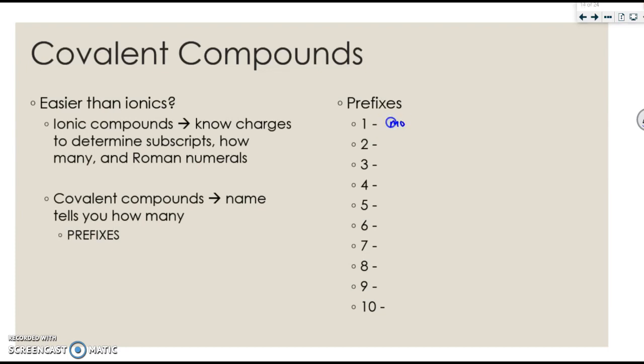So, one is mono, two is di, three is tri, four is tetra, five is penta, six is hexa, seven hepta, eight octa, nine nana, and ten deca. Most of these are geometric shapes, so they shouldn't be too hard to remember.